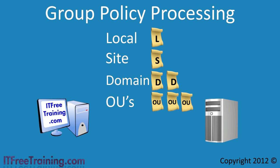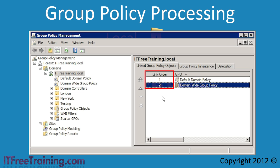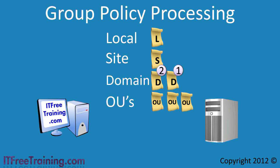In some cases you may have multiple Group Policies linked at the same level in Active Directory. In this example there are two Group Policies linked at the domain level. In Group Policy Management, notice there is a link order for each of the Group Policies. The link order determines the order in which the Group Policies will be applied when there is more than one — they are processed in the reverse order. The Domain Group Policy with link order 2 will be applied first, then the one with link order 1 is applied next, meaning link order 1 will overwrite any settings from link order 2.